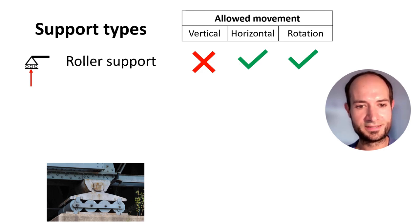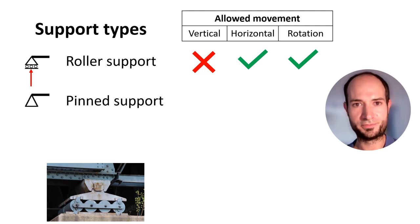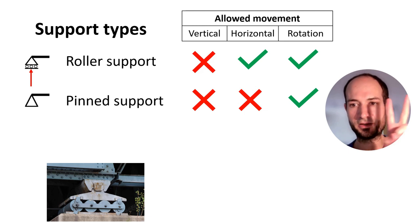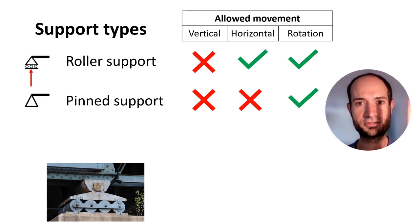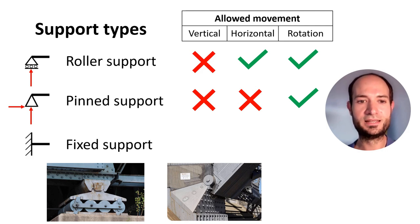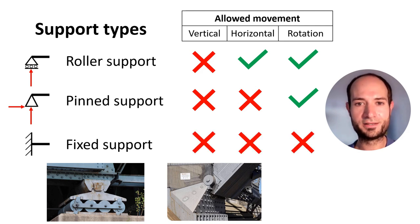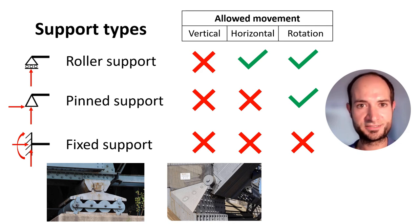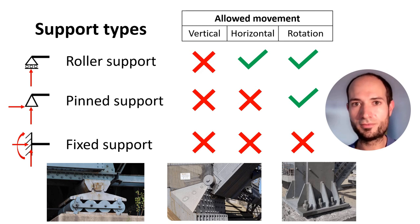For example, this bridge has a roller support. We also have the pin support. In this case, there is no movement horizontally or vertically, but there is rotation. So we have two restrictions against movement — two reactions: horizontal and vertical. The last one is the fixed support: no vertical movement, no horizontal movement, and no rotation. So we have three reactions — vertical, horizontal, and a moment to prevent rotation. An example is a steel column anchored to the ground.